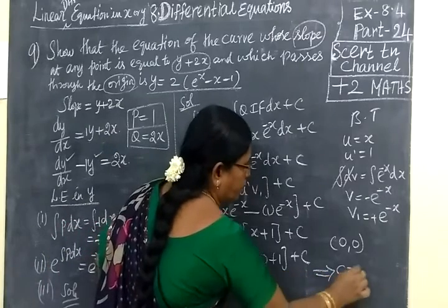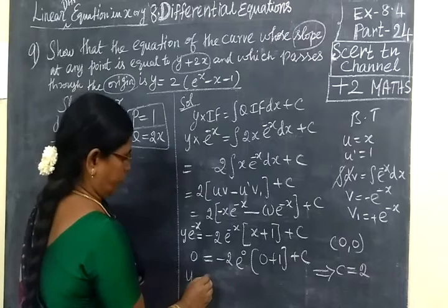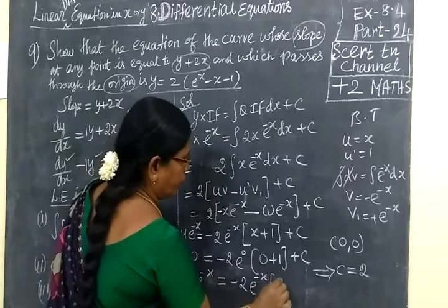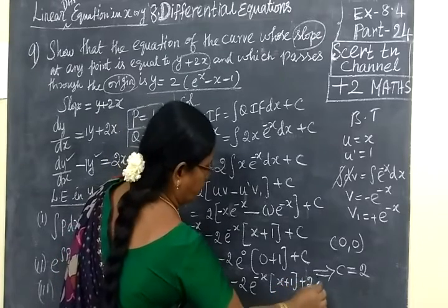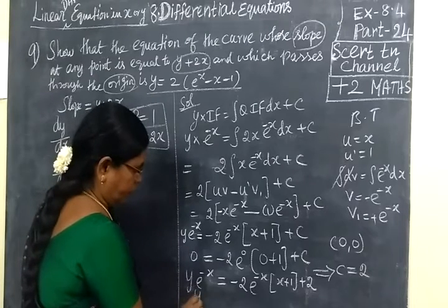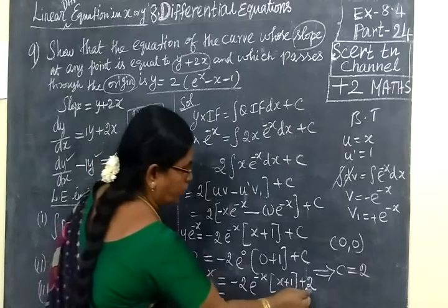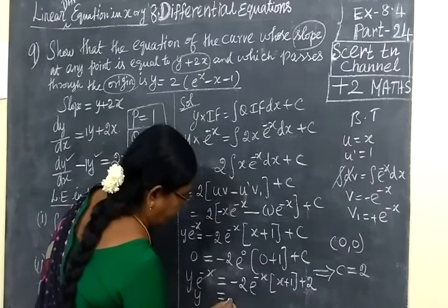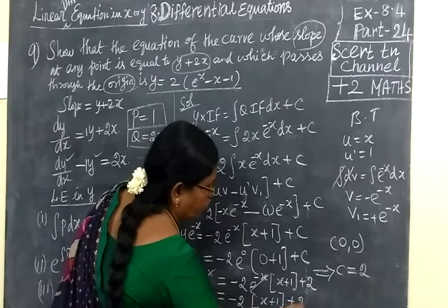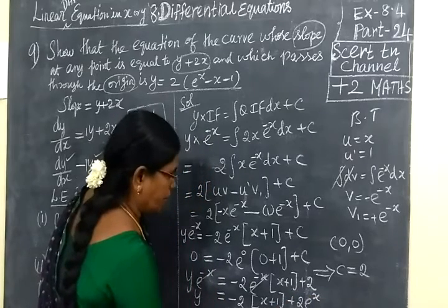So c equal to 2. Now substitute back: y into e power -x equal to minus 2 e power -x (x plus 1) plus 2. Dividing both sides by e power -x, we get y equal to minus 2(x plus 1) plus 2 times e power x. So y equal to minus 2x minus 2 plus 2 e power x.